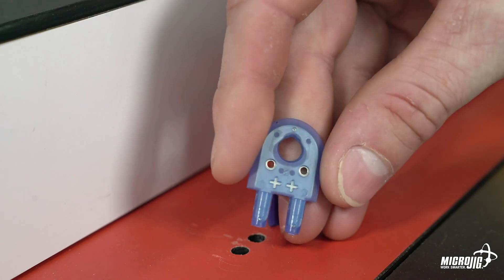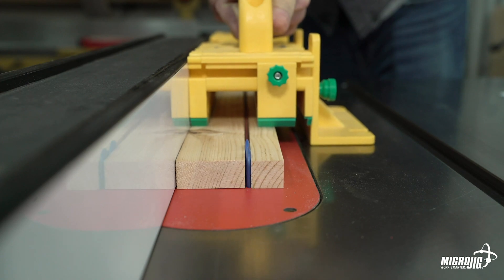They can be micro adjusted side to side using the built-in offset to account for run out from blade to blade.